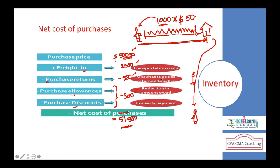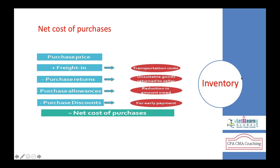So the value of the inventory is $51,800, not just $50,000. The $50,000 is only the purchase price at the supplier's place. The full inventory value — the net cost of purchases — comes to $51,800 in this example, and this is how we calculate the proper inventory value.